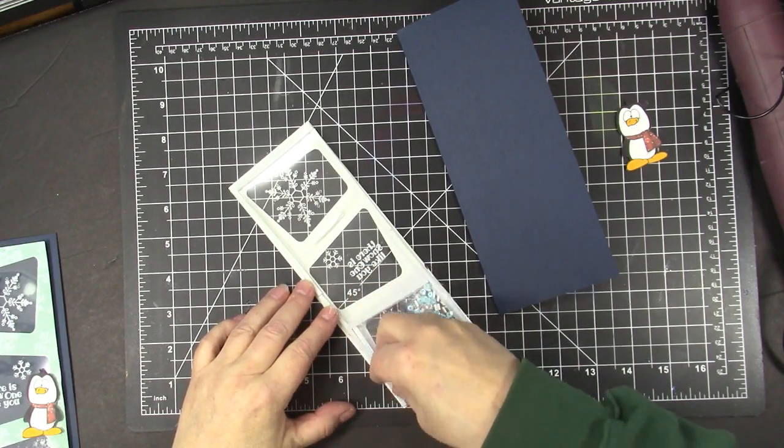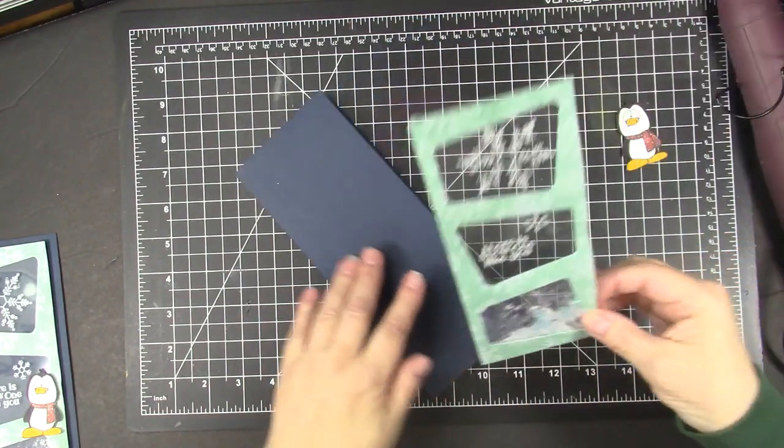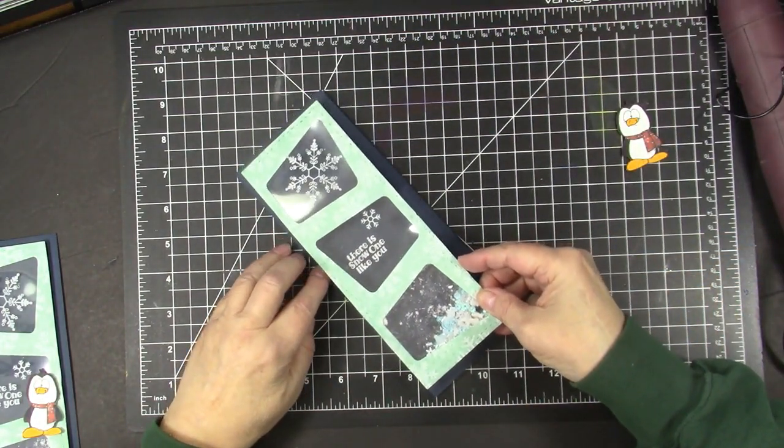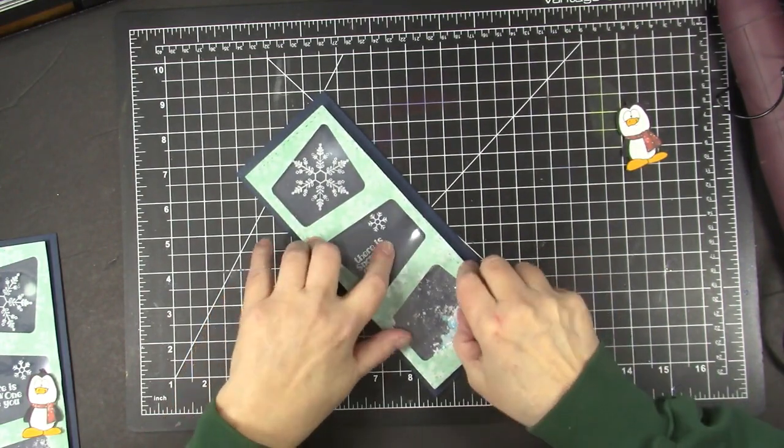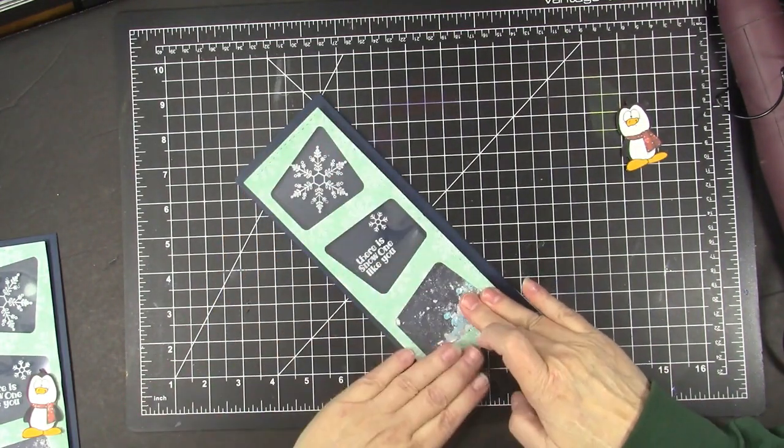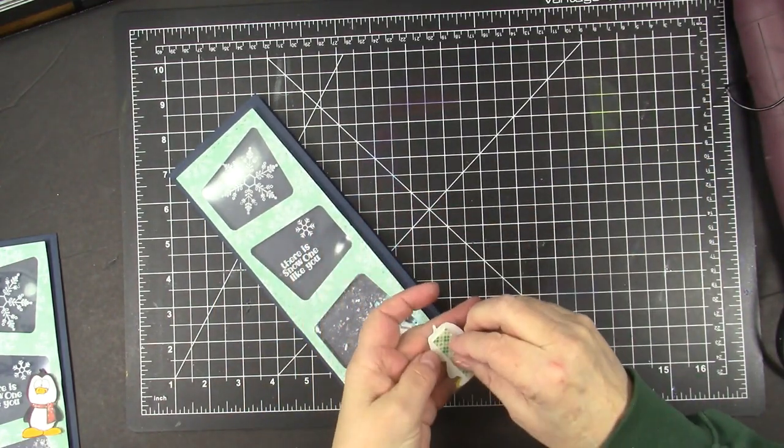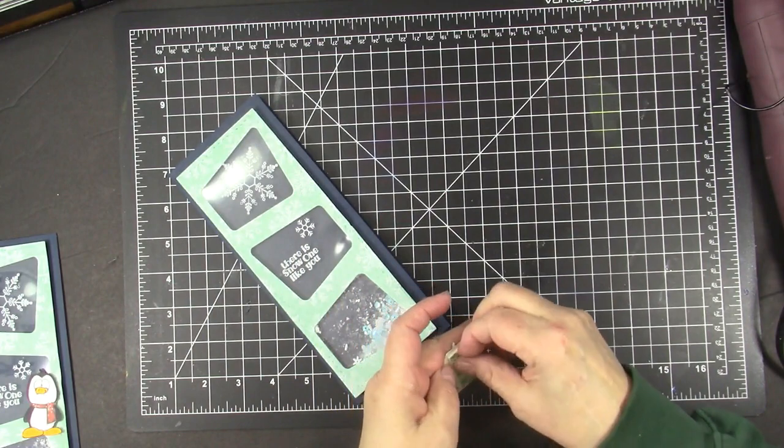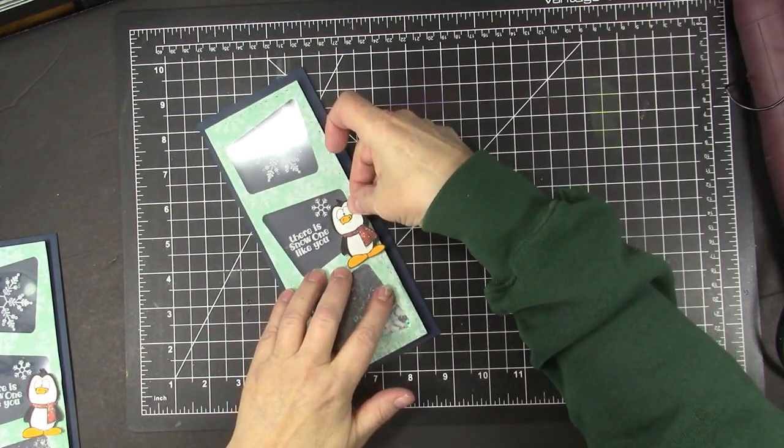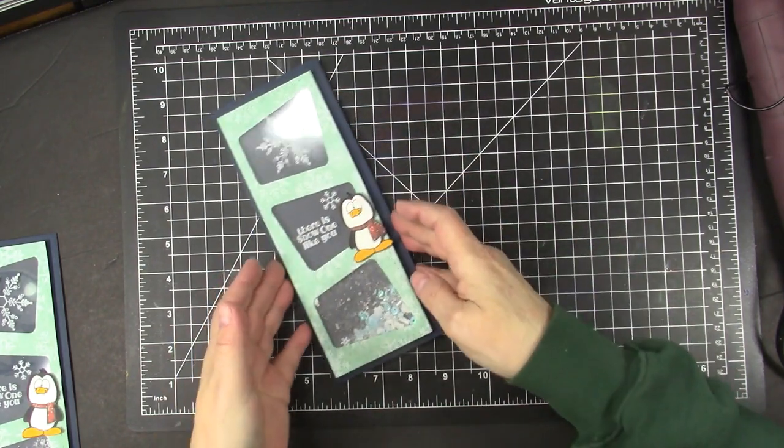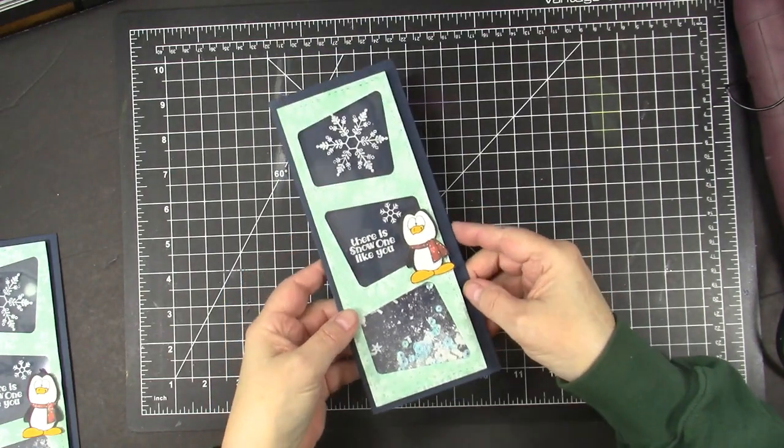Sometimes that's the hardest part. There we go. And apply that to the front of our slimline card. And then I have a cute little penguin from that Snowy Hugs set. And he goes on there. And our Snow Much Fun card is complete.